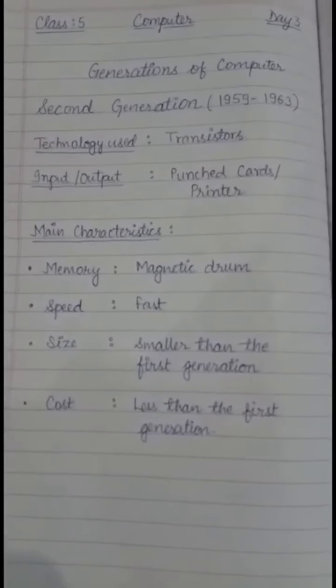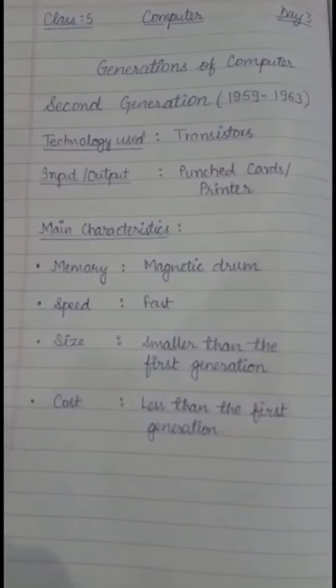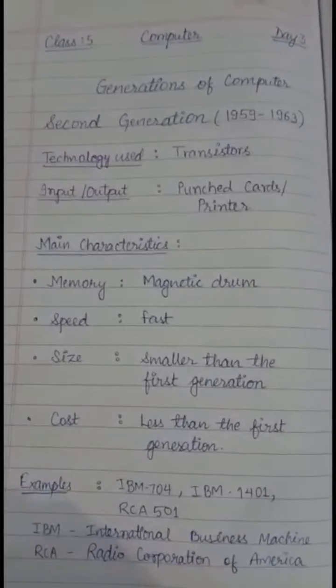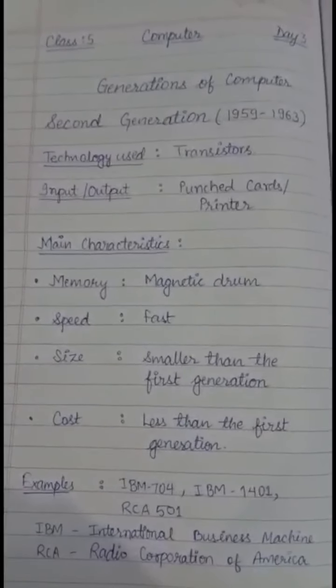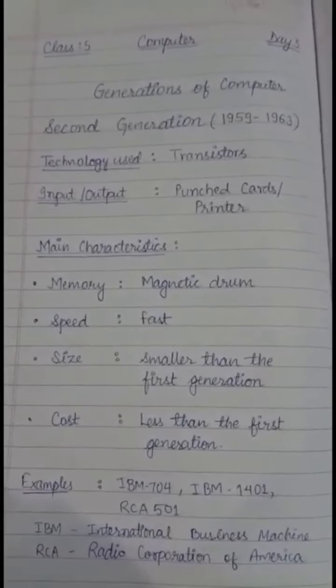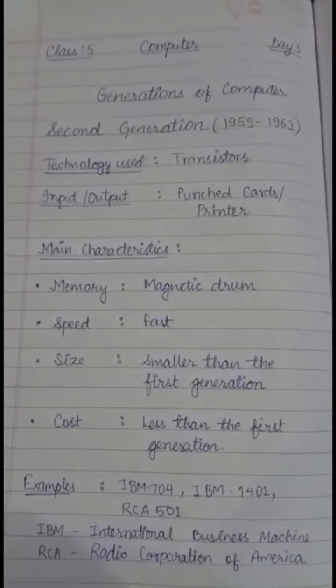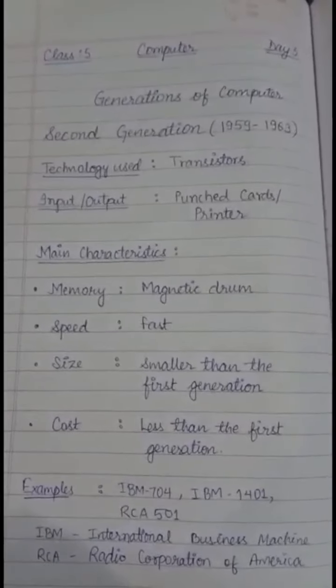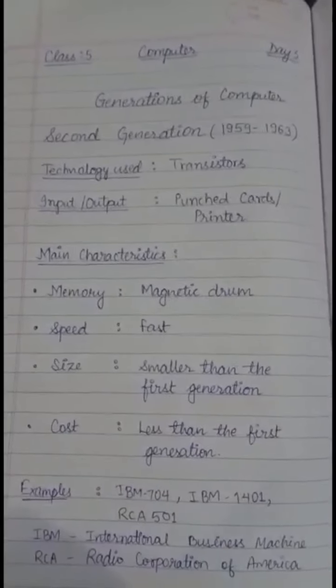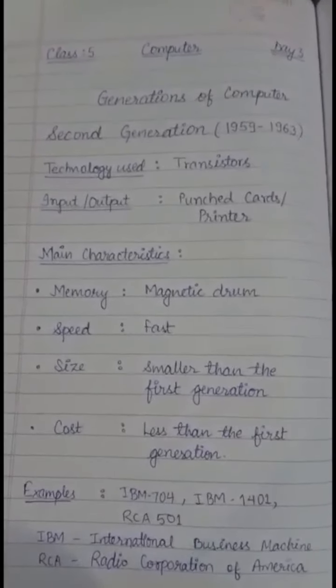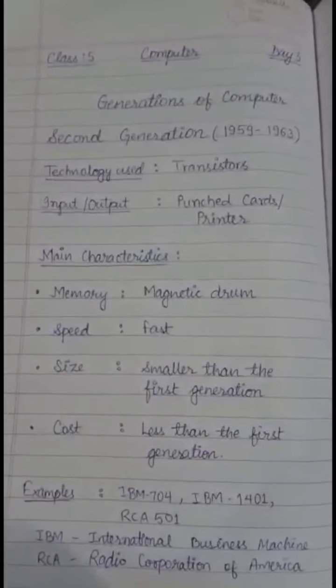Let's discuss a few examples of the second generation computers: IBM 704, IBM 1401, RCA 501. These were the computers which were developed in second generation. Now you must be thinking about what is the full form of IBM and RCA.